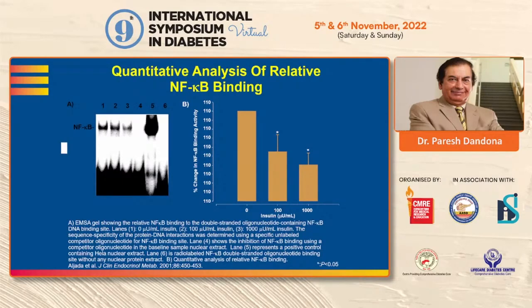NF-κB — nuclear factor kappa-B — is the key transcription factor that causes inflammation. In column stains on the left you can see dose-dependent inhibition by insulin, and the histogram on the right confirms the dose-dependent inhibition.